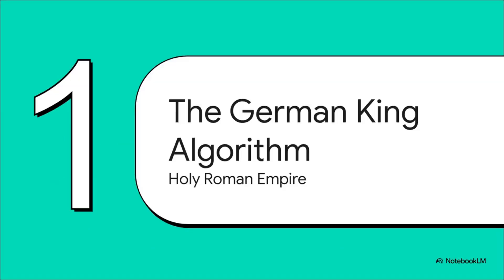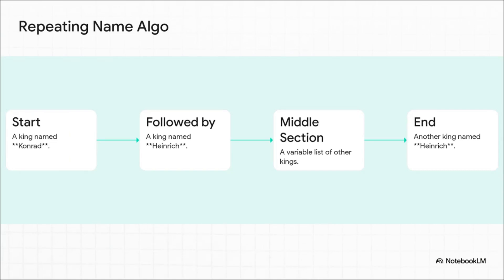Our first case study is the list of kings from the Holy Roman Empire, from 911 all the way to 1313. The theory argues this entire line of succession is governed by an algorithm. A reign starts with a Conrad, followed by a Heinrich, then a list of kings with other names, closing out with another Heinrich. This pattern repeats four times — and the list in the middle grows predictably: first three kings, then four, then five, then six. That's practically a recursive definition — way too neat for the bloody, chaotic reality of medieval succession.